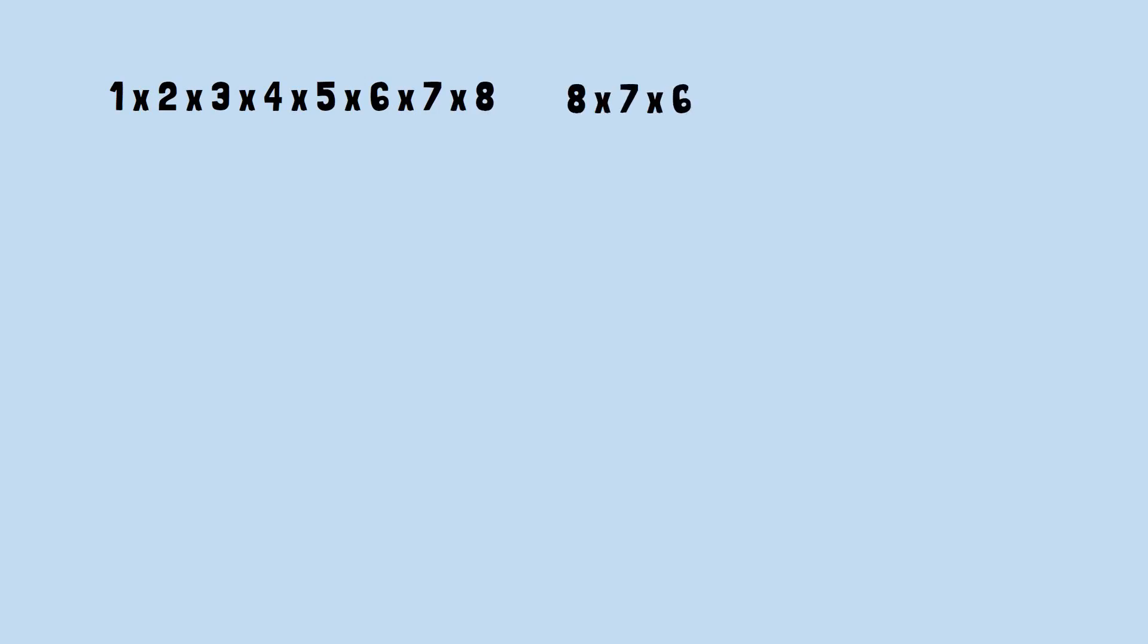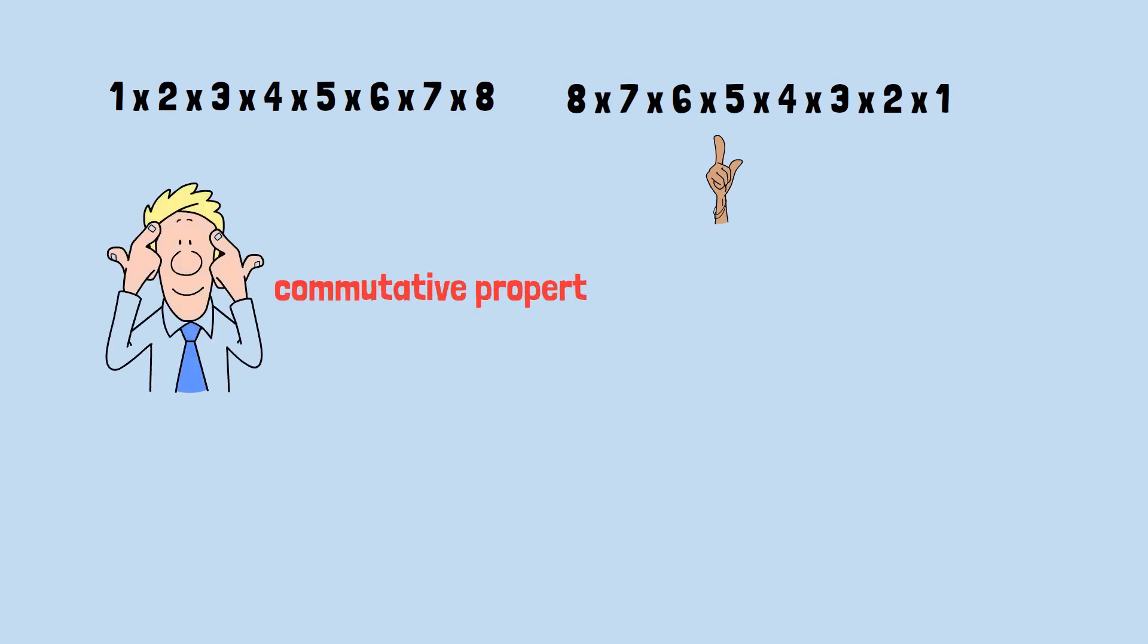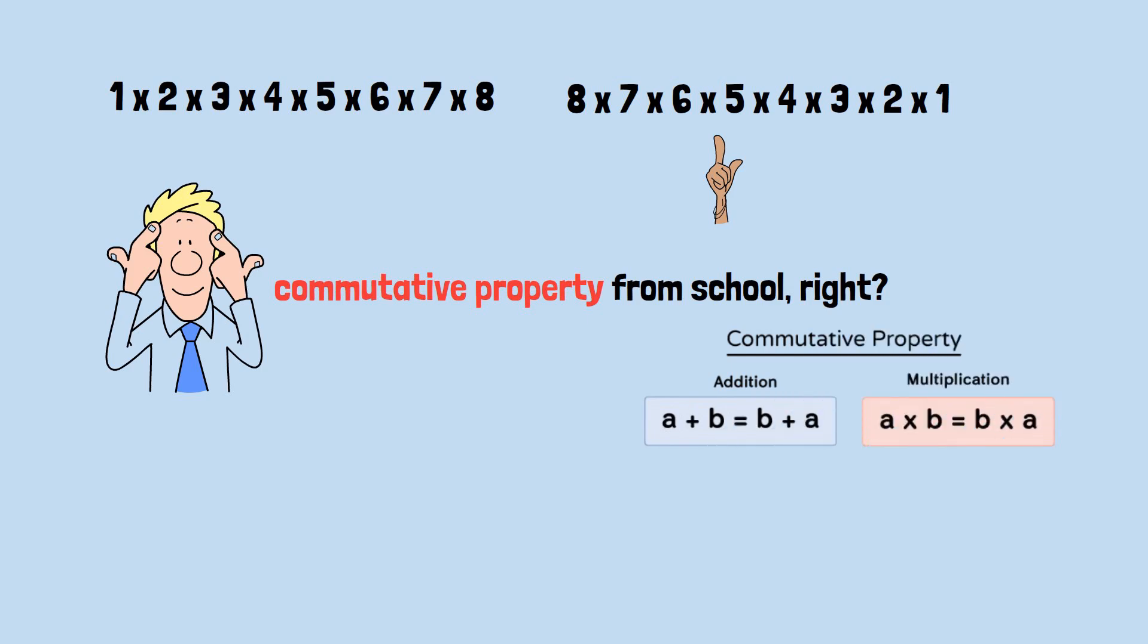And eight times seven times six times five times four times three times two times one are the exact same problem. You remember the commutative property from school, right? A times B equals B times A. It doesn't matter what order you multiply the terms in. But here's where things get weird.